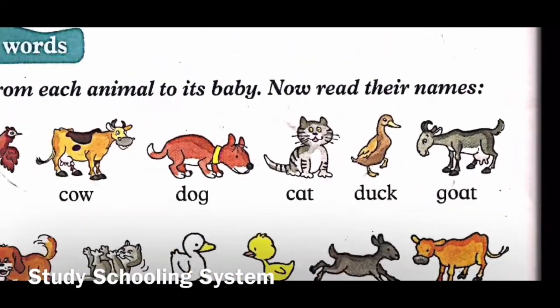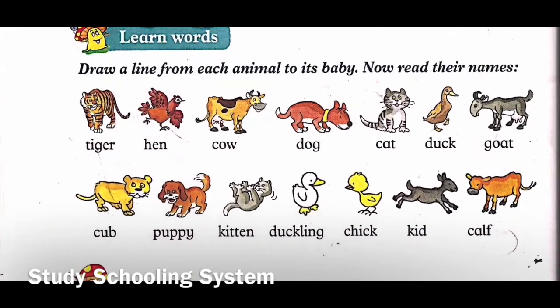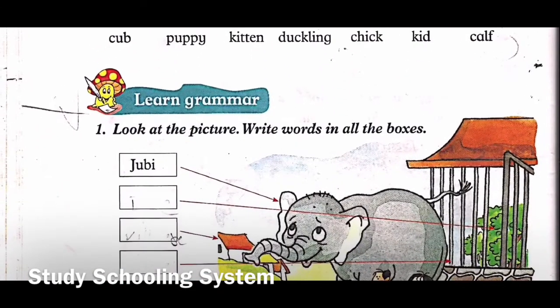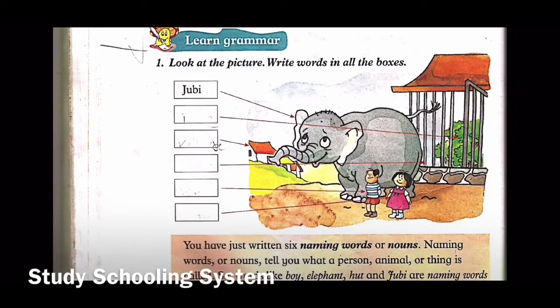The last one is goat - what is a goat's baby called? Yes, a kid. Just draw a line. You can see from the pictures as well. After drawing lines you should read their names together: tiger-cub, hen-chick, cow-calf, dog-puppy, cat-kitten, duck-duckling, goat-kid. Say these names a few times. After drawing the lines, move on to the next exercise.